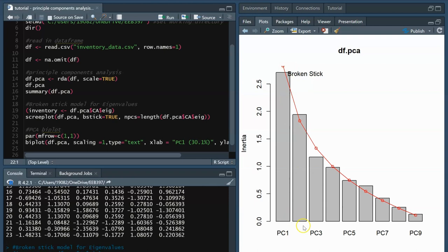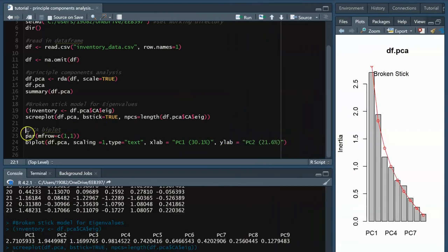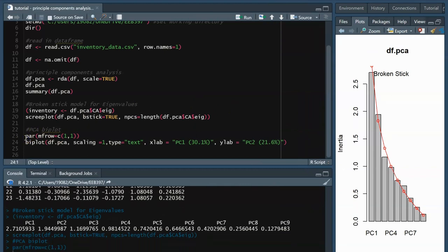Now let's move on to create our PCA biplot. This first line of code, PAR, allows us to arrange multiple plots on the screen as a matrix if you'd like. Since I am only interested in displaying my PCA biplot, the matrix coordinates would be 1, 1. To create the plot itself, I use the biplot function, then the name of the PCA object.